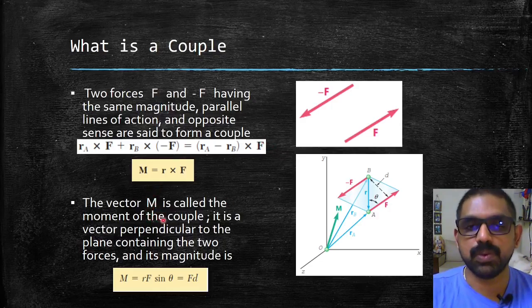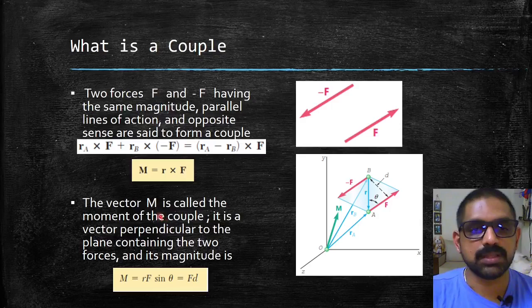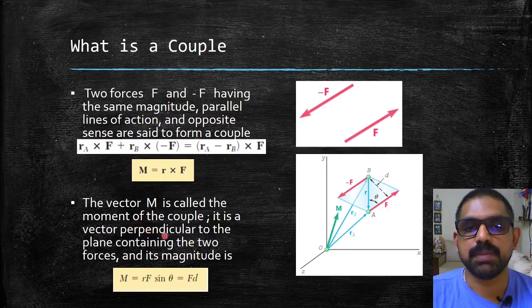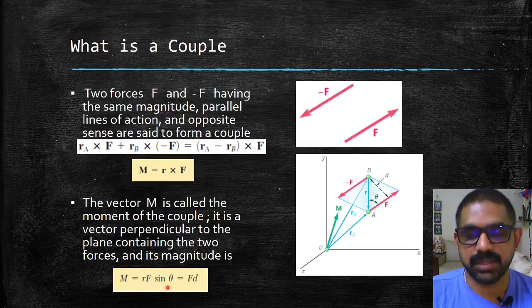The vector M is the moment of the couple. It is a vector perpendicular to the plane containing the two forces, and its magnitude is given as M = rF sin θ, and you can also take it as F times d, where d is the perpendicular distance between these two lines of action.